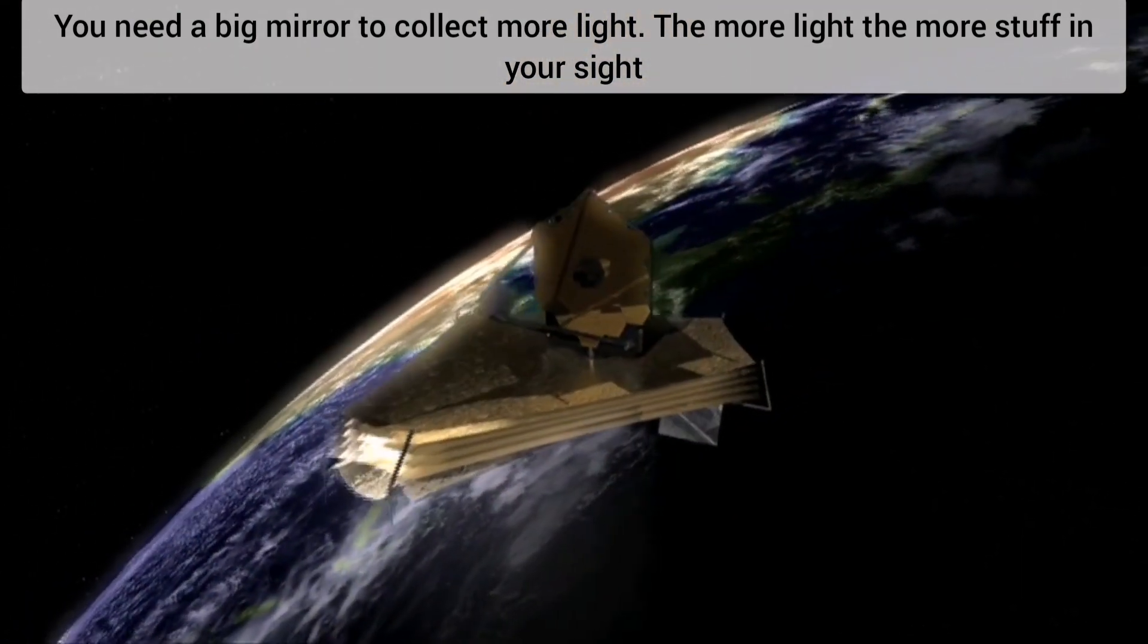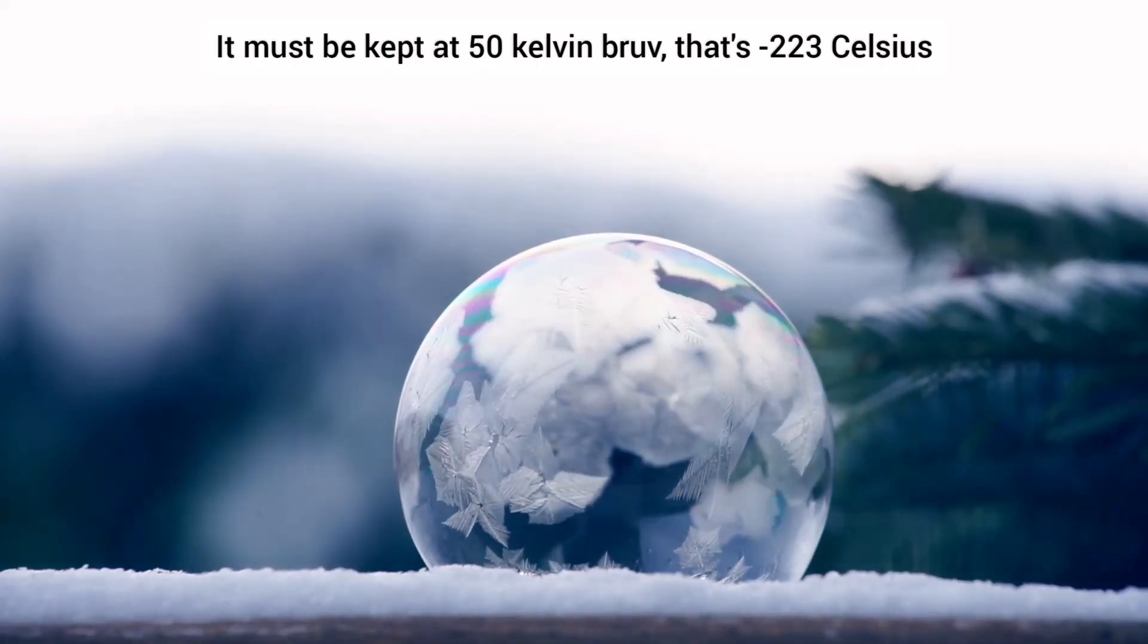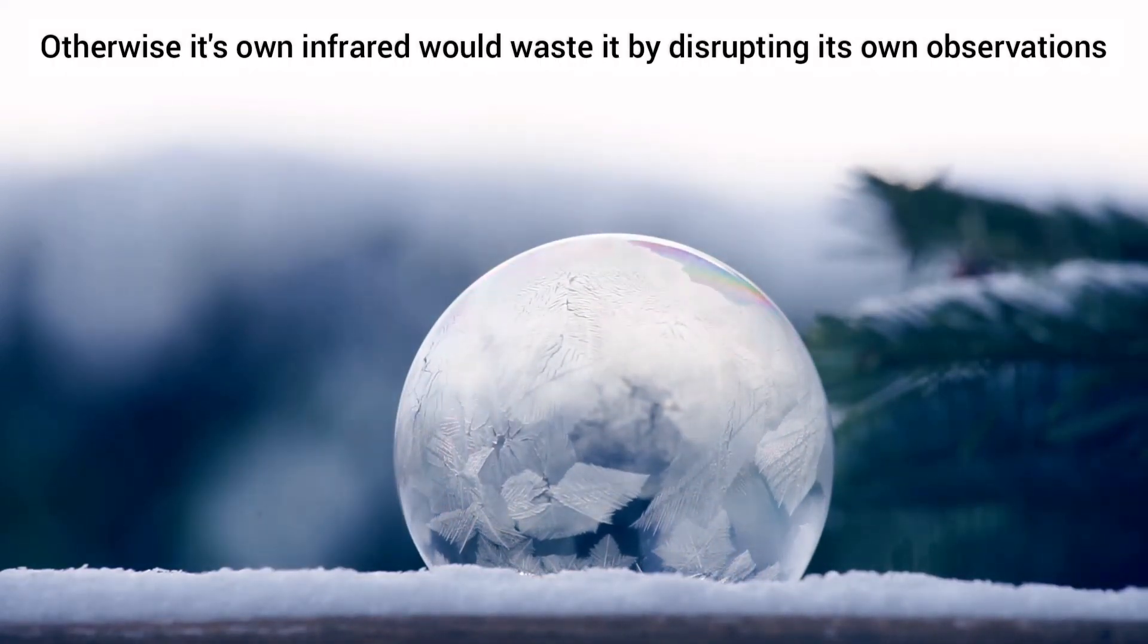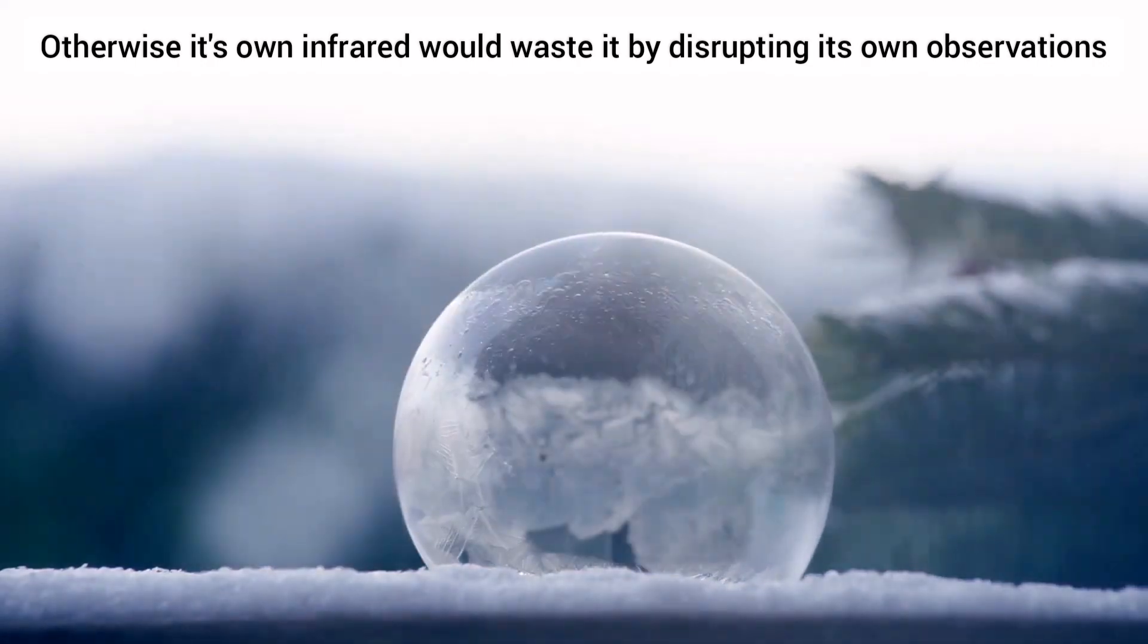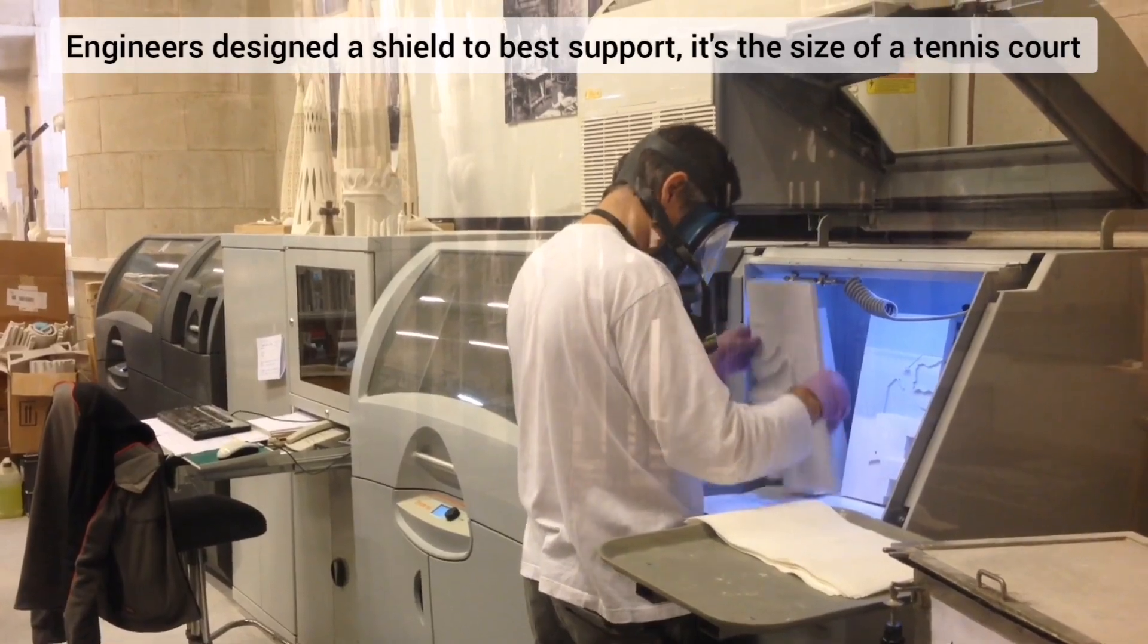It must be kept at 50 Kelvin, bruv. That's minus 223 Celsius. Otherwise, its own infrared would waste it by disrupting its own observations. Engineers designed a shield to best support. It's the size of a tennis court.